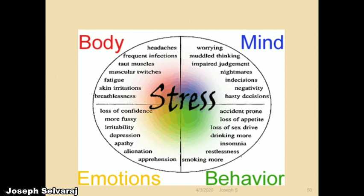In the mind, stress manifests as worrying, impaired judgment, indecision, negativity, and hasty decisions — resulting in body stress and mind stress. The outputs appear in two forms: emotions and behavior. In behavior: insomnia, restlessness, tendencies toward smoking and drinking, and loss of appetite. In emotions: loss of confidence, depression, apathy, and apprehension.